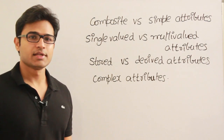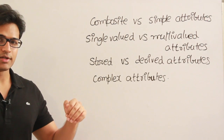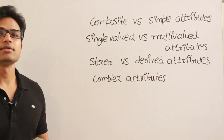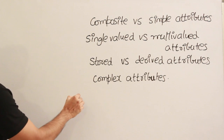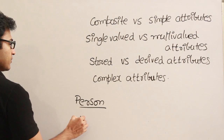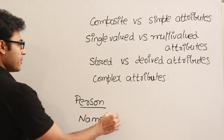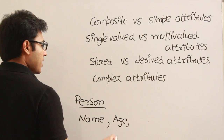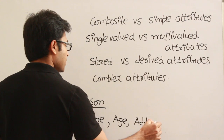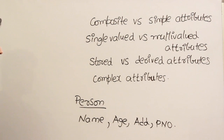Now, what are the various types of attributes? There are various ways to classify attributes. Let us classify all of them, discuss each one, and then talk about the relationships between classifications. Assume that person is an entity, and a person will have attributes like name, age, address, and phone number.